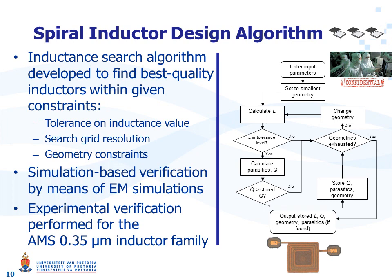Due to the complicated relationship between the inductance and the inductor geometry, as well as between the quality factor and inductor parasitics, and due to the fact that the quality factor also changes the apparent value of the inductance as frequency increases, an inductance search algorithm was developed to find the best quality inductor given certain constraints. These constraints include the tolerance on the inductance value, the search grid resolution — where smaller grids lead to more accurate inductance values but longer algorithm execution — and finally the geometry constraints, which include the maximum size of the inductor and the ratio between the outer and inner diameter. The algorithm as well as its model were verified by means of electromagnetic simulations, and additionally verified experimentally for a family of inductors provided by Austria Microsystems.